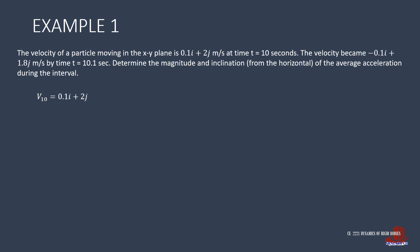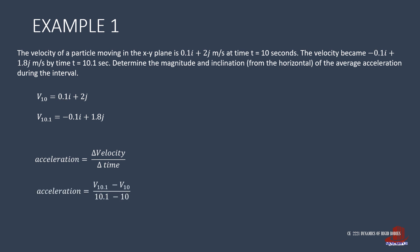We let velocity at time equal to 10 seconds be notated as v10, and same with v10.1. We know from the basic motion formulas that acceleration is the change of velocity over the change of time. So from the premise, we have the difference of v10.1 and v10 all over the time difference between 10.1 and 10.